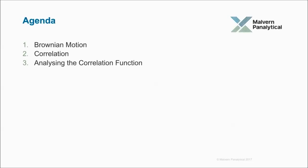So this is the agenda. It's a very short agenda. I'm going to start by discussing Brownian motion. I'm then going on to talk about correlation. And finally, how we analyze the correlation function. How do we get size information out of the correlation function itself?